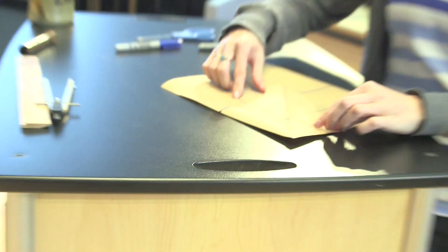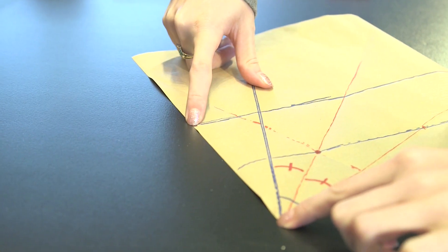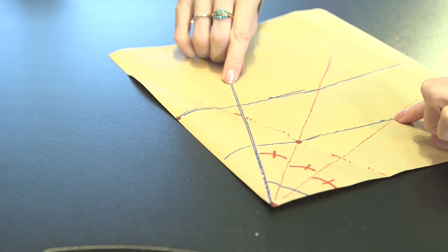What power does origami have that the straight edge and compass didn't have? Exactly. Very good question. So the trick was this one step that I did, which was taking these two points and lining them up with two lines.